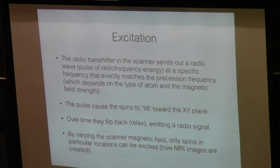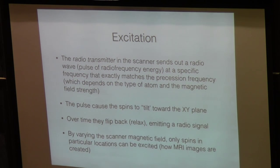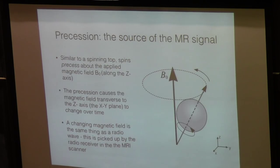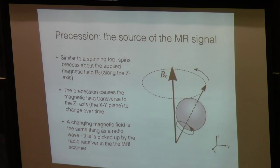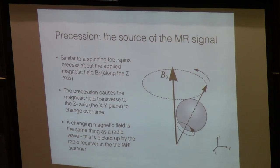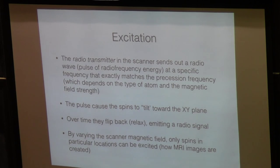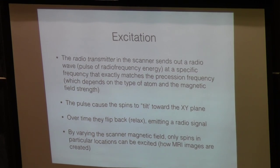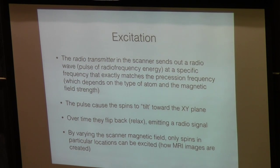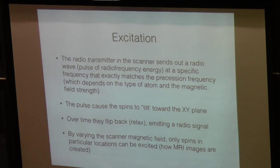You can use a radio transmitter in the scanner to send out a radio wave — a pulse of radio frequency energy at a specific frequency that matches the precession frequency of the atom. The pulse will cause the atom to tilt more than it does when just sitting statically in the field. We can then measure the relaxation after the pulse is removed: the atom relaxes and comes back to the z-axis along the magnetic field, and we can measure that with our receiver to figure out the makeup of these atoms in vivo.